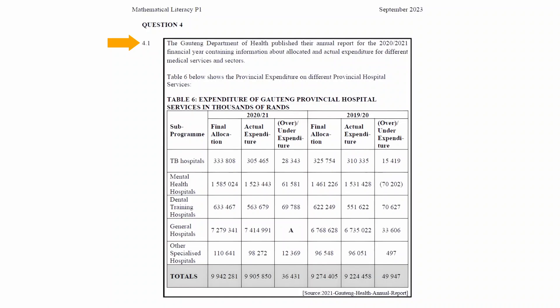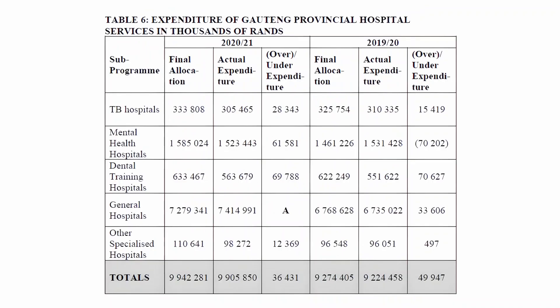The Gauteng Department of Health published their annual report for the 2020-2021 financial year, containing information about allocated and actual expenditure for the different medical services and sectors. Table 6 shows the provincial expenditure on different provincial hospital services.